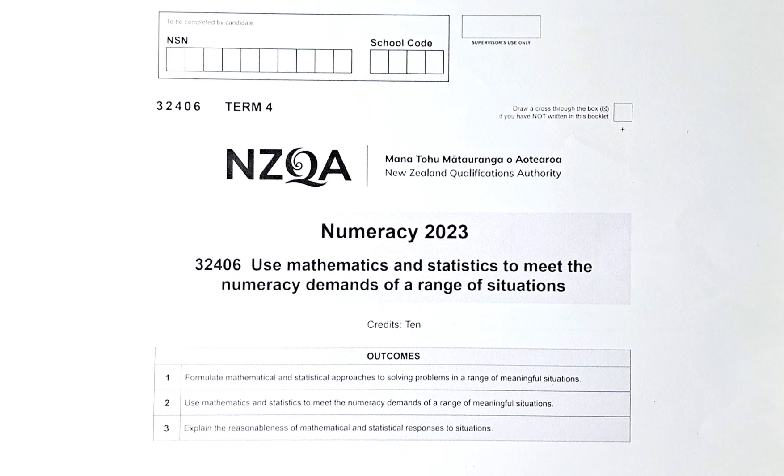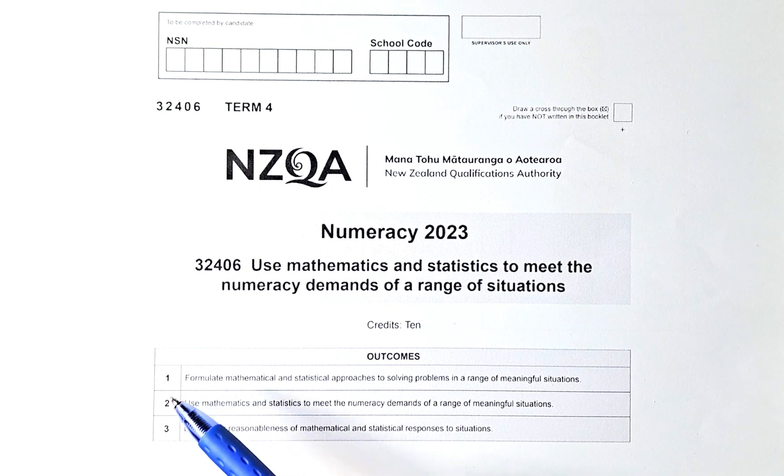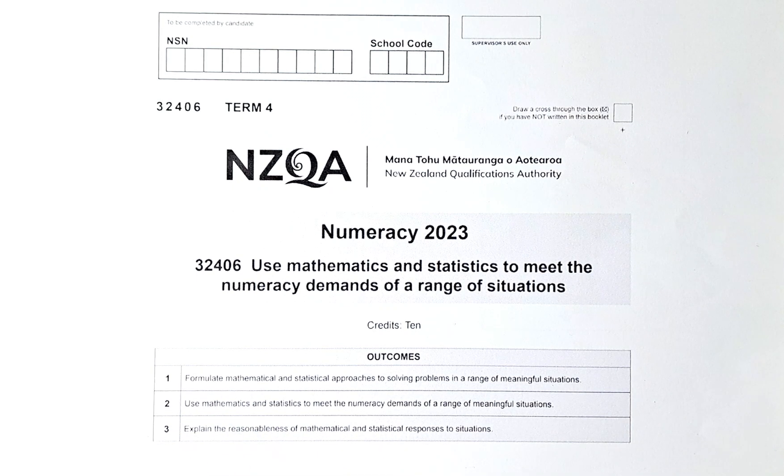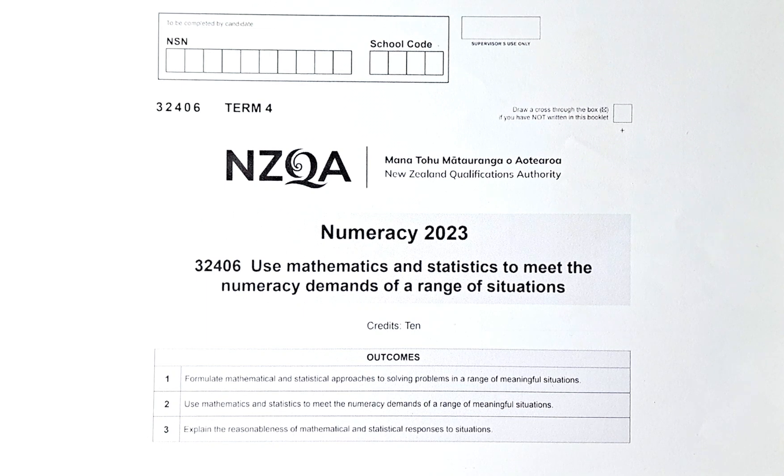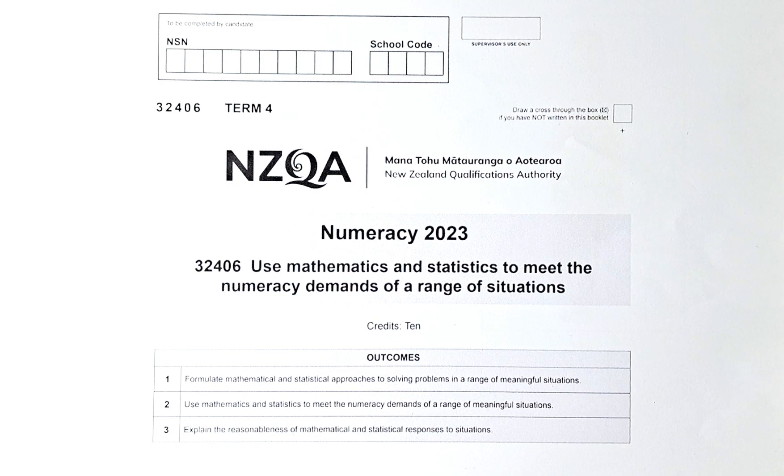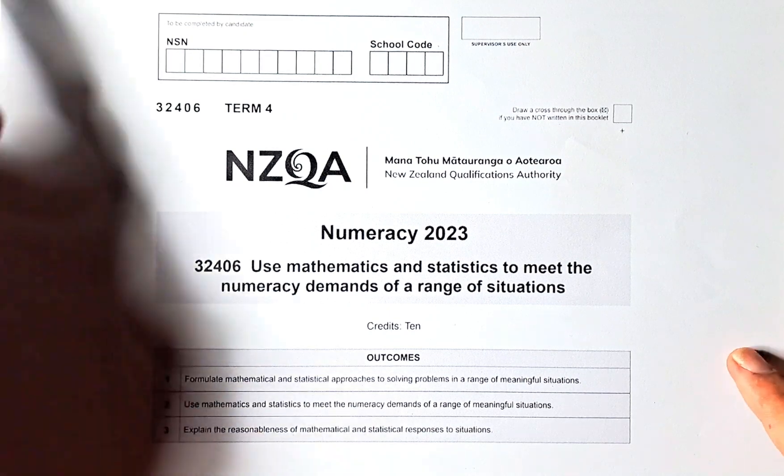As mentioned earlier, you have to get a certain number of Outcomes 1, 2 and 3 to achieve in this paper. Again, this is a unit standard. There's no merit or excellence. You either get achieved or not achieved in this paper. So without further ado, let's do question 3A.